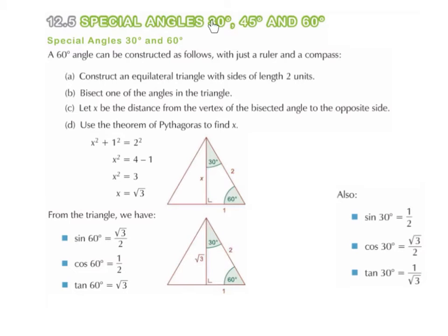Special angles: 30 degrees, 45 degrees, and 60 degrees. We'll focus on 30 degrees and 60 degrees first. A 60 degree angle can be constructed with just a ruler and a compass.